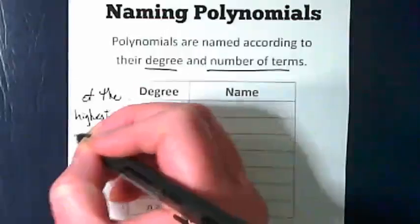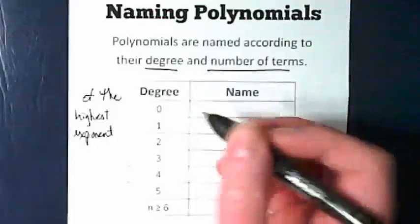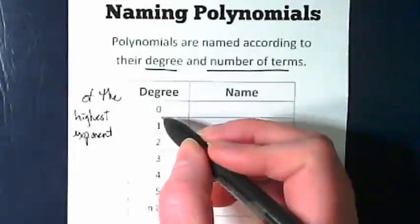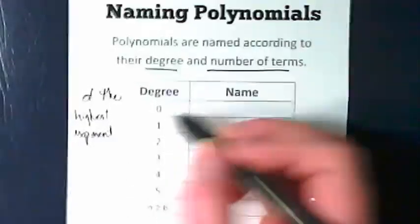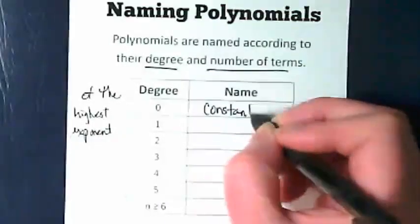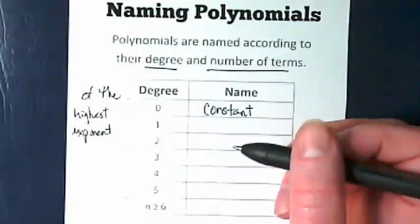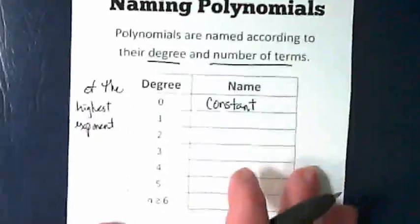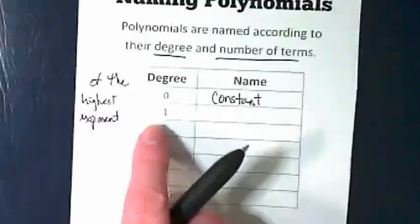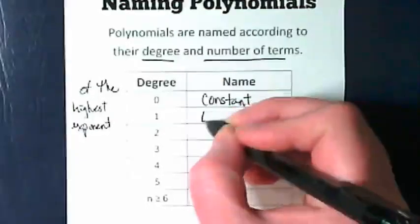If we have a degree of 0, its name is constant. And I do want you to write these with capital letters - they are like a first and last name. If the highest exponent is a 1, we call it linear.